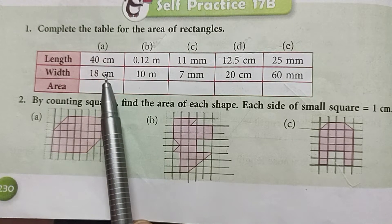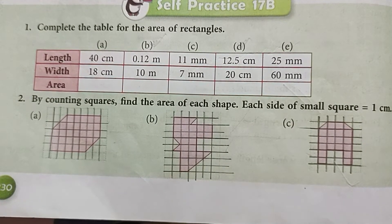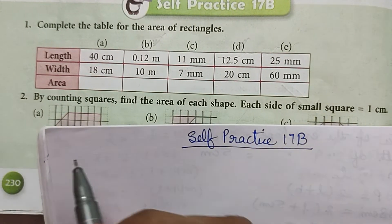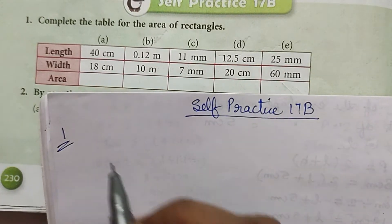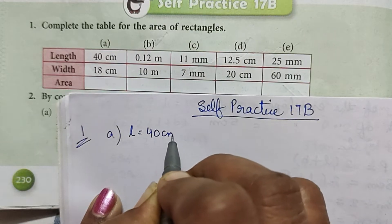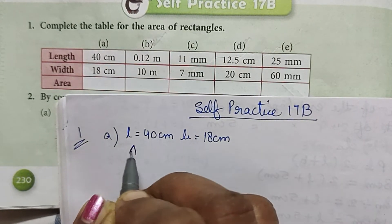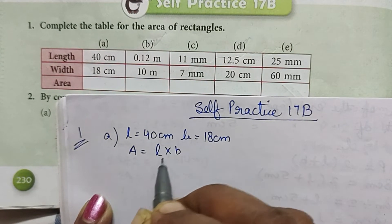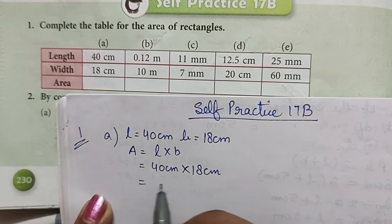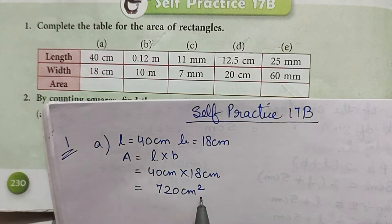The first question is: complete the table for the area of rectangles. We are given length and width, and we need to find the area to complete the table. Part a: length is 40 centimeter and width is 18 centimeter. Area is L × B, so 40 cm × 18 cm is equal to 720 centimeter square.